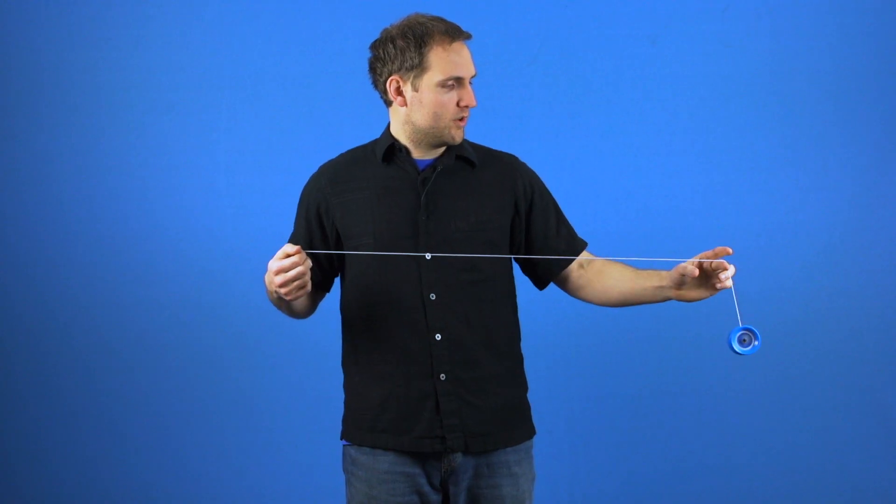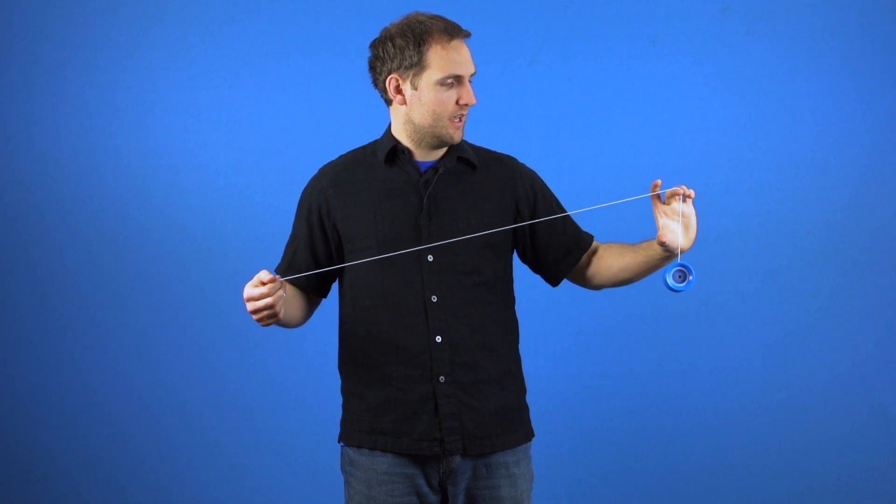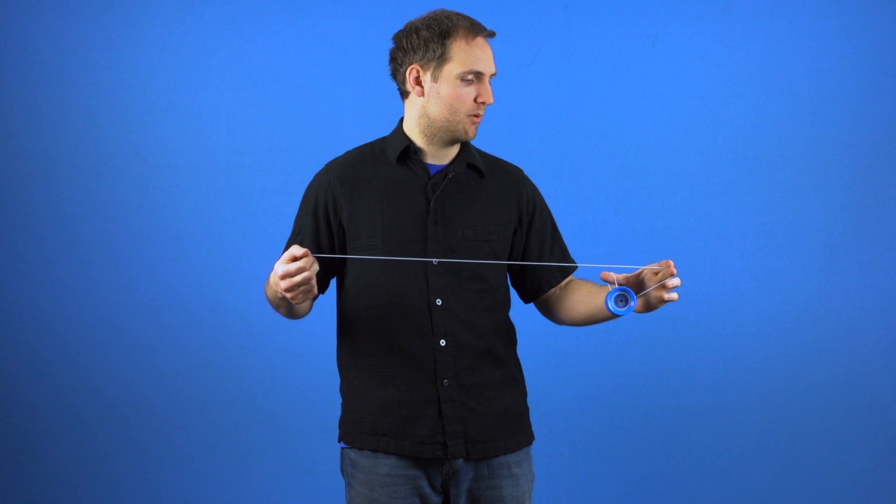When you are doing that all the same tips apply. Again you want the string near the tip of your finger and you want to keep that C shape and keep the yoyo close to your thumb. That will help a lot.